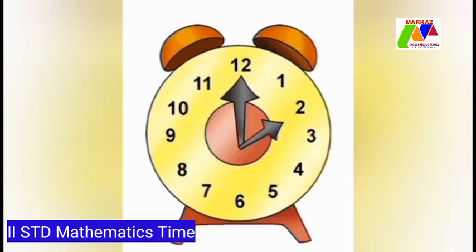The long hand shows the minutes. We also see the numerals from 1 to 12 at equal intervals. 1 hour is equal to 60 minutes, and each interval indicates 5 minutes. So 12 units multiplied by 5 minutes is equal to 60 minutes.